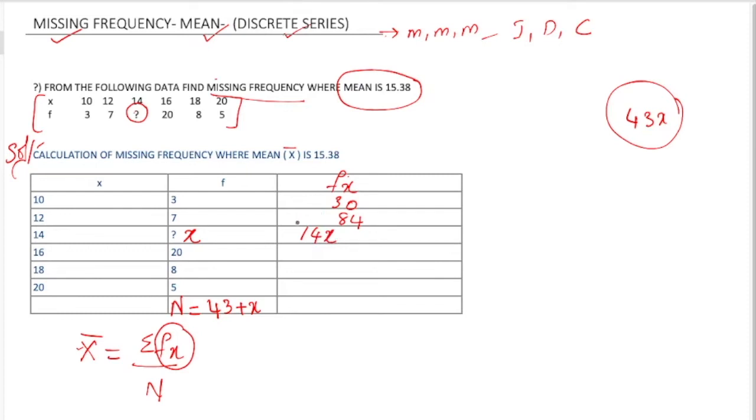I'm writing 14x because I'm multiplying these two numbers: one number and one variable. 16 into 20 is 320, 18 into 8 is 144, 20 into 5 is 100.